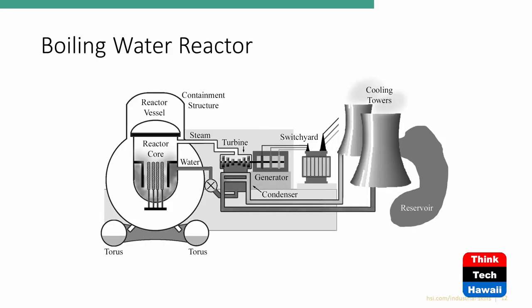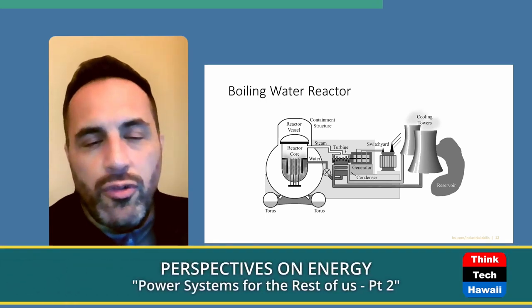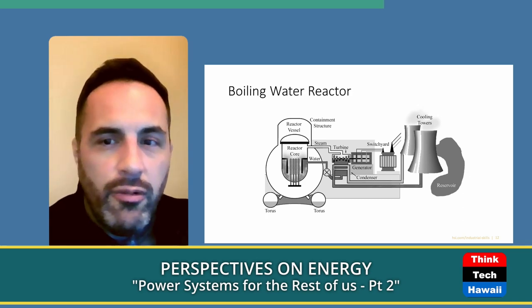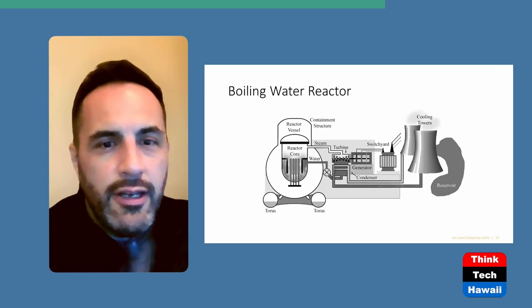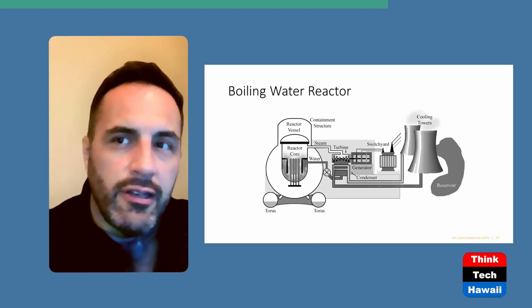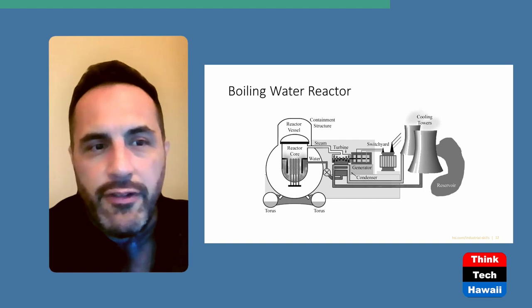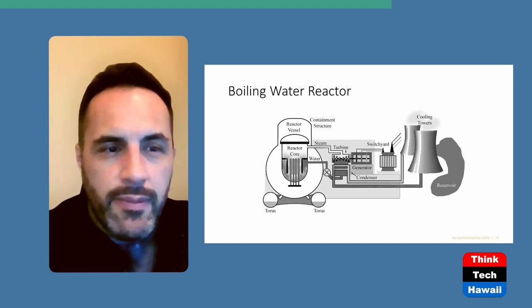A boiling water reactor is somewhat like the Chernobyl design and is more efficient, but radioactive water comes out to the steam turbine and back into the containment area, meaning the actual steam turbine is radioactive. There are fewer losses than the pressurized water reactor, but you run a greater risk of exposure to radioisotopes, particles, and radiation outside the system. You don't see many of these anymore. In the U.S., pressurized water reactors have dominated for decades and are the safer, more common design.